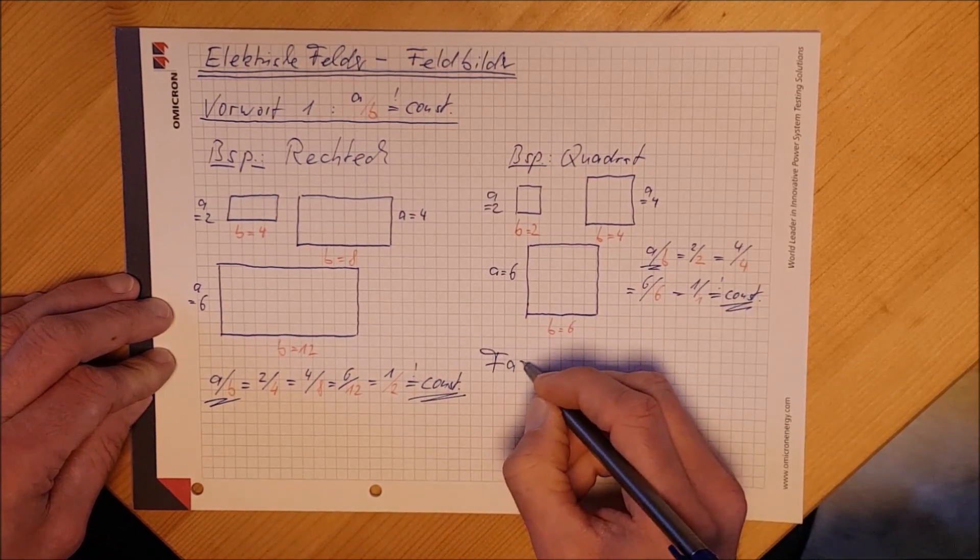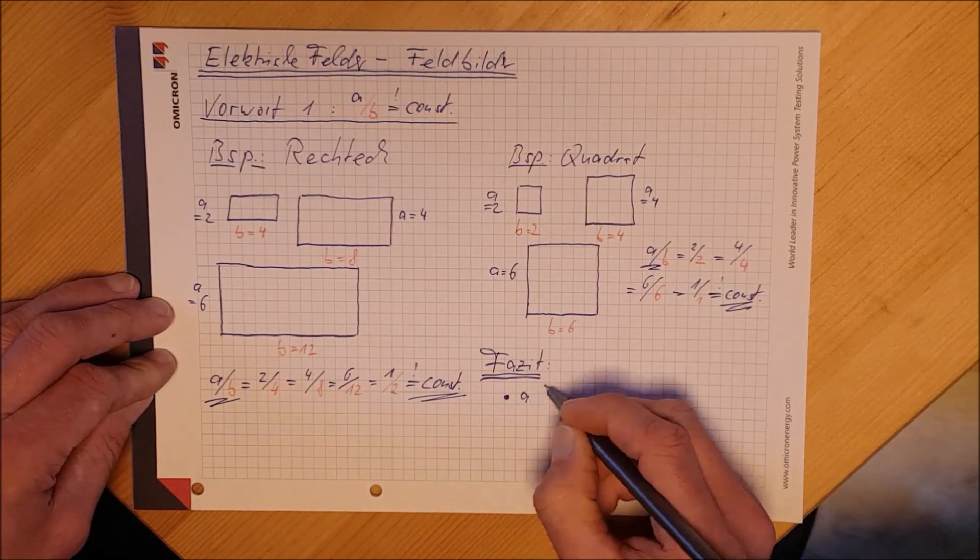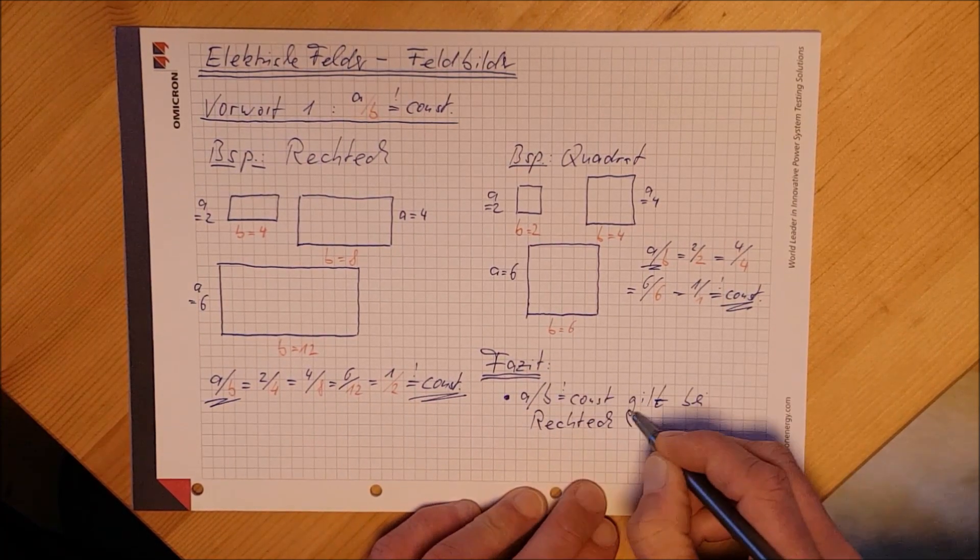Damit kommen wir zum Fazit. Sowohl bei Rechtecken als auch bei Quadraten haben wir ein Seitenverhältnis a zu b gleich konstant.